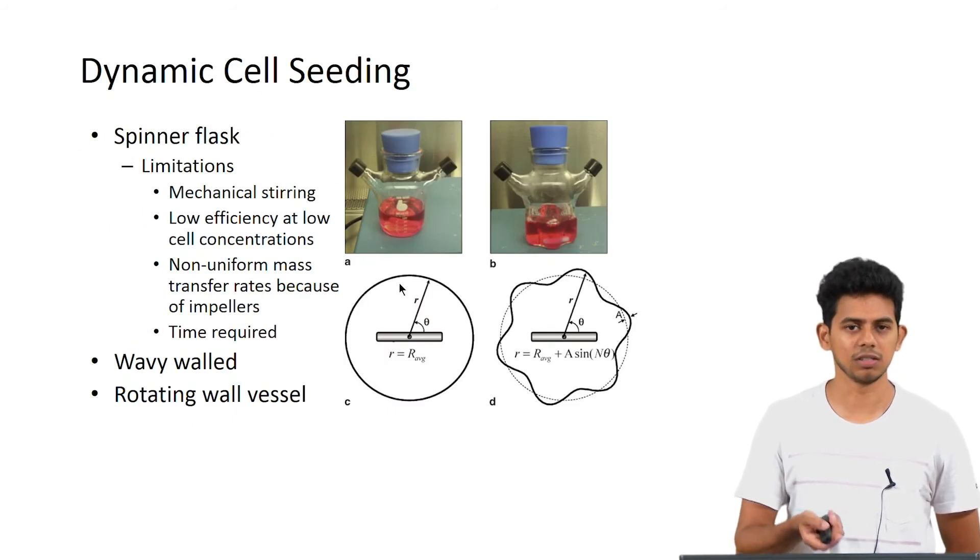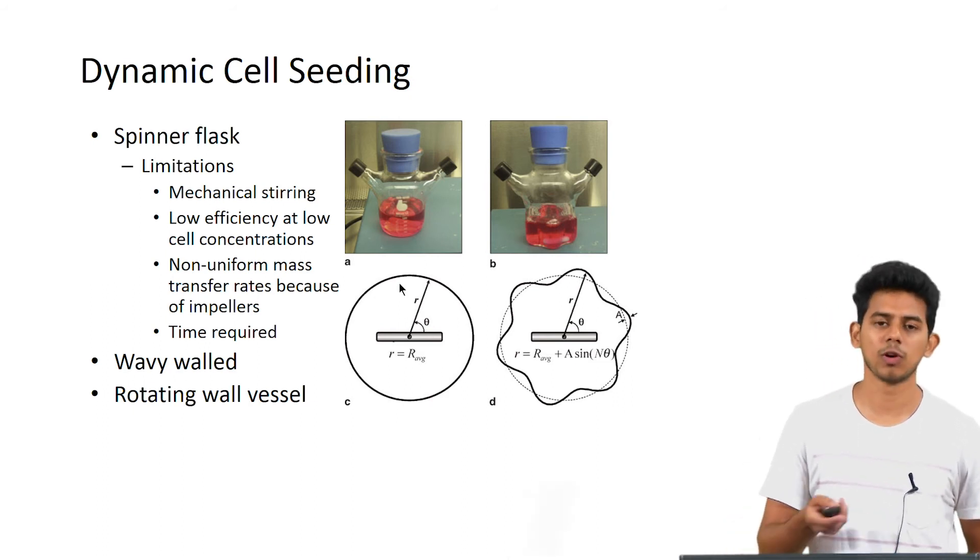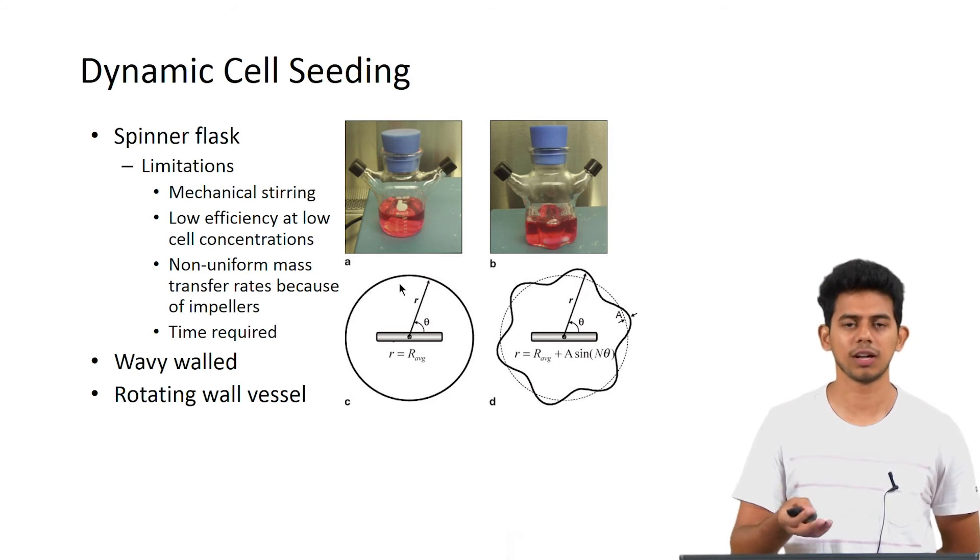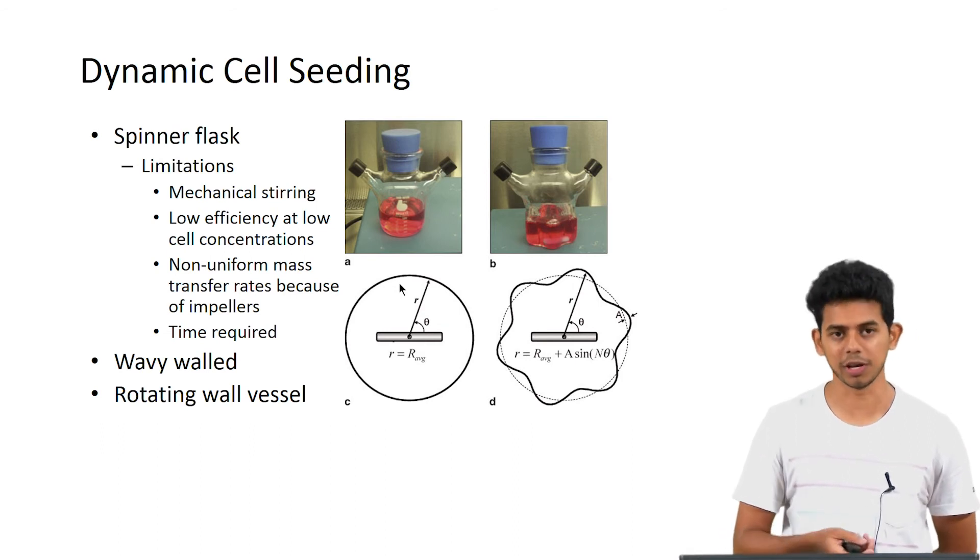That is why dynamic cell seeding is used mainly in the bioreactors. Here what is done is it is ensured that the cells end up penetrating throughout the scaffold and they are distributed in a more even fashion. These are some of the techniques normally used for seeding the cell within the bioreactor.